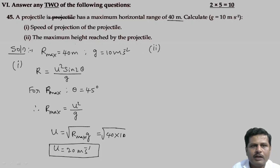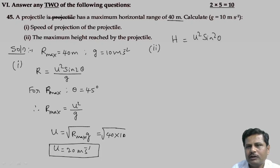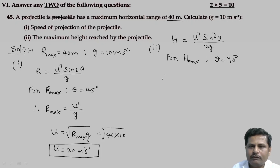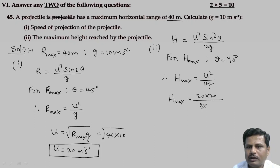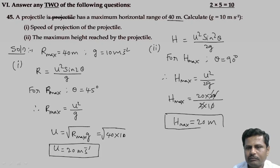Now let me find out the maximum height reached by the projectile. We know that the height reached by the projectile equals u squared sine squared theta divided by 2g. For maximum height, theta should be 90 degrees. Therefore, maximum height H equals u squared divided by 2g. Substituting: 20 squared divided by 2 into 10, that is 400 divided by 20, equals 20 meters. The maximum height reached by the projectile is 20 meters.